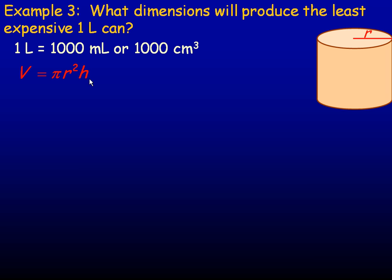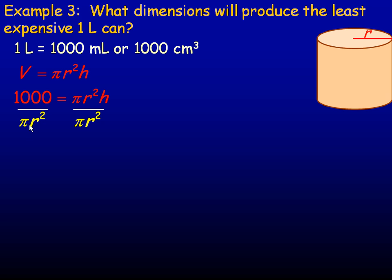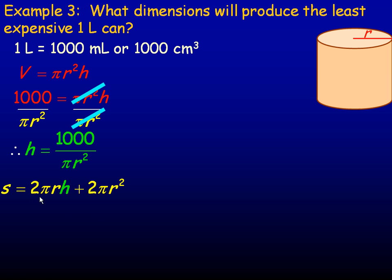Least expensive means the smallest surface area in this context. We need the volume formula because the volume has to be exactly a thousand cubic centimeters. I'm going to substitute a thousand in place of the volume and solve for h. Dividing both sides by πr² gives us h = 1000 / (πr²).